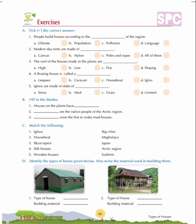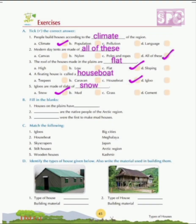For each question, four options are given and we have to tick the correct answer. Question 1: People build houses according to the dash of the region — climate, population, pollution, or language. Population, pollution and language have no effect on the kind of house being built, so the answer is climate. Whether the climate is hot, cold or rainy, the design and material required to build the house is chosen based on the climatic condition.